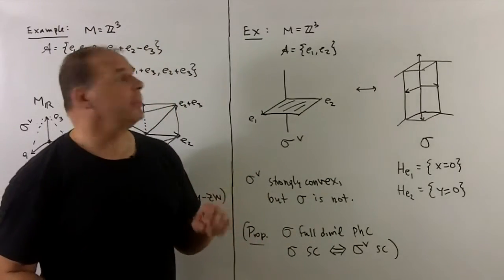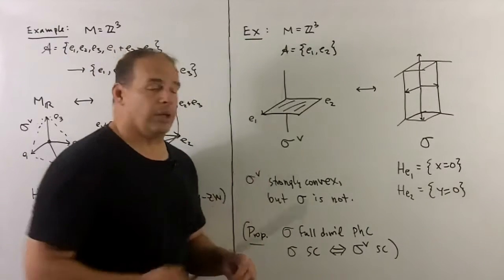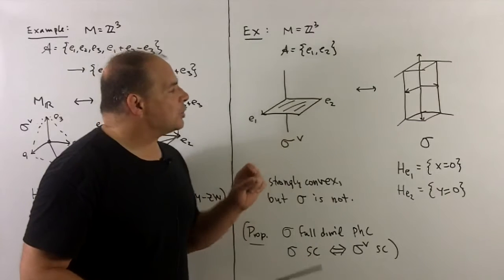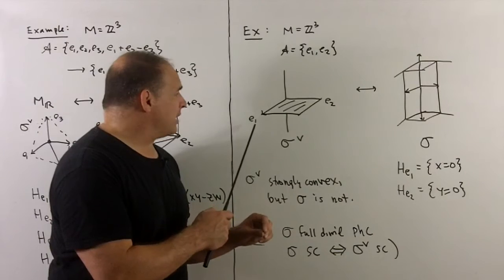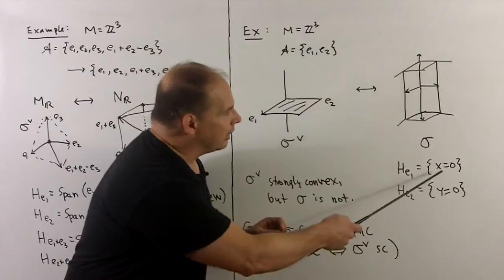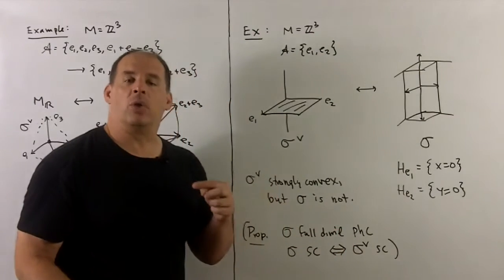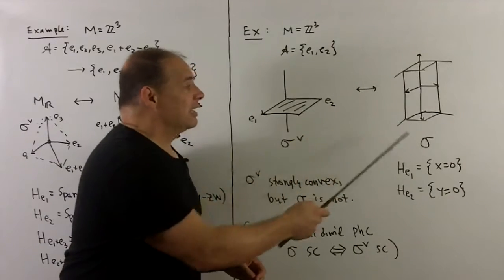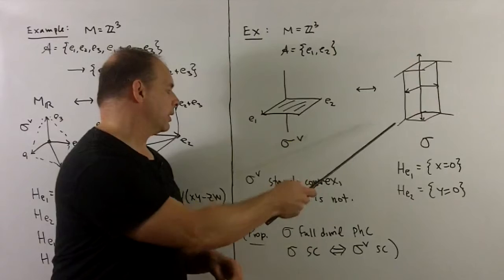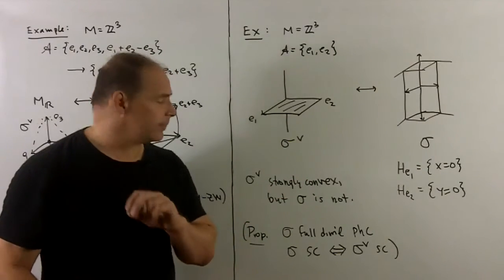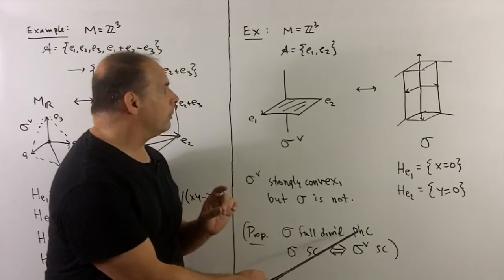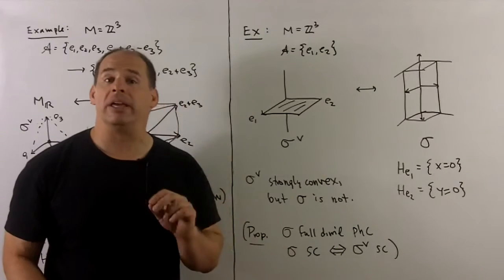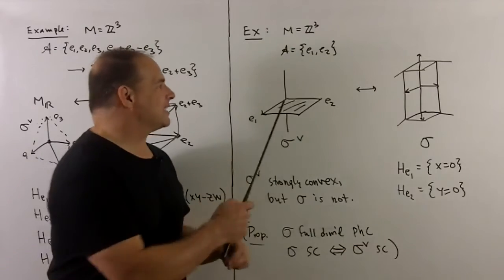Another example, still with M equal to Z^3, but now take the cone generated by E1 and E2. This is a two-dimensional polyhedral cone sitting in three-space. Note this is strongly convex, but if we dualize, we get something that's not strongly convex. Taking the hyperplanes corresponding to E1 and E2 — the YZ plane and the XZ plane — and filling in according to the direction the vectors point gives us a quadrant pointing out to the front. We can see a line contained in this cone, so it is not strongly convex. The proposition: if sigma is a fully dimensional polyhedral cone, then sigma is strongly convex if and only if sigma-check is strongly convex. That's not happening here.